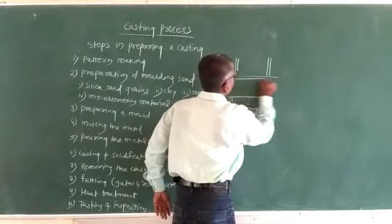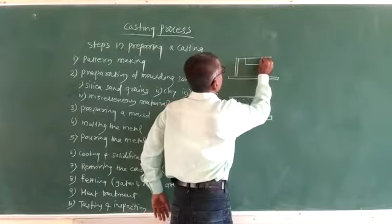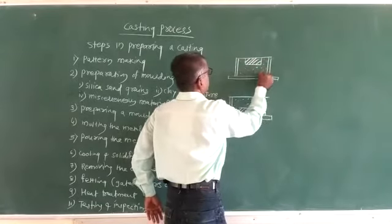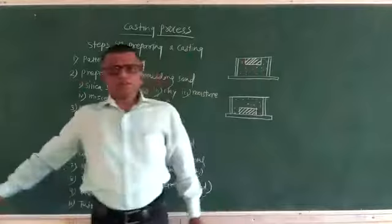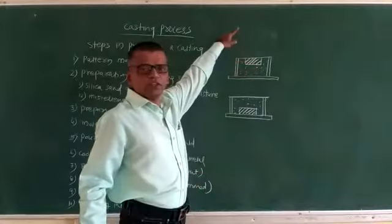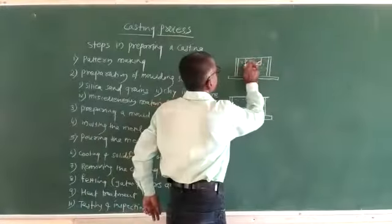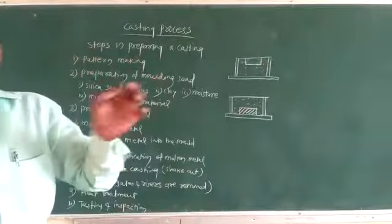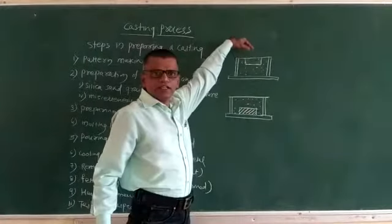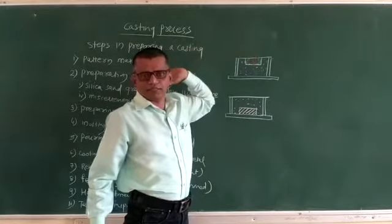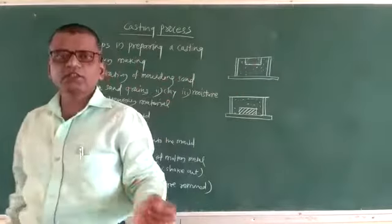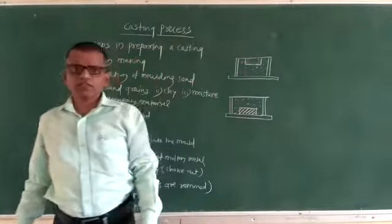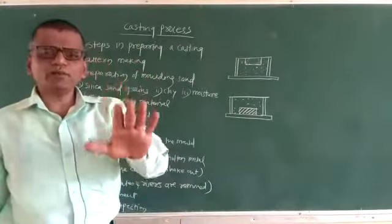After that, remove the box from the molding board and invert it. When you remove the pattern from that molding sand, a cavity is created in the molding sand. After creating the cavity, molten metal is poured into that cavity, and after cooling and solidification the object is taken out from that molding sand. This is actually the basic casting process.